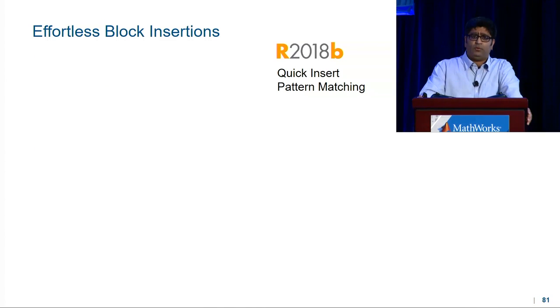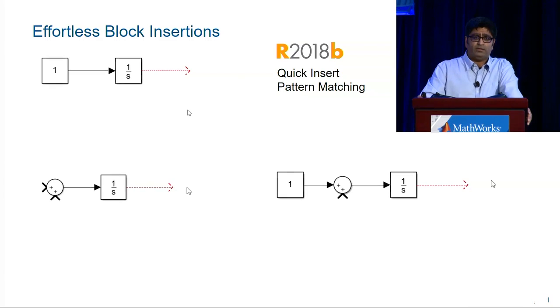In 18B, quick insert got a whole lot smarter. It can do pattern matching and suggest blocks based on patterns it has previously seen. So here, I have three systems that look very similar. The only difference are the blocks that are upstream of the integrator. So the integrator is in different contexts in each of these systems.